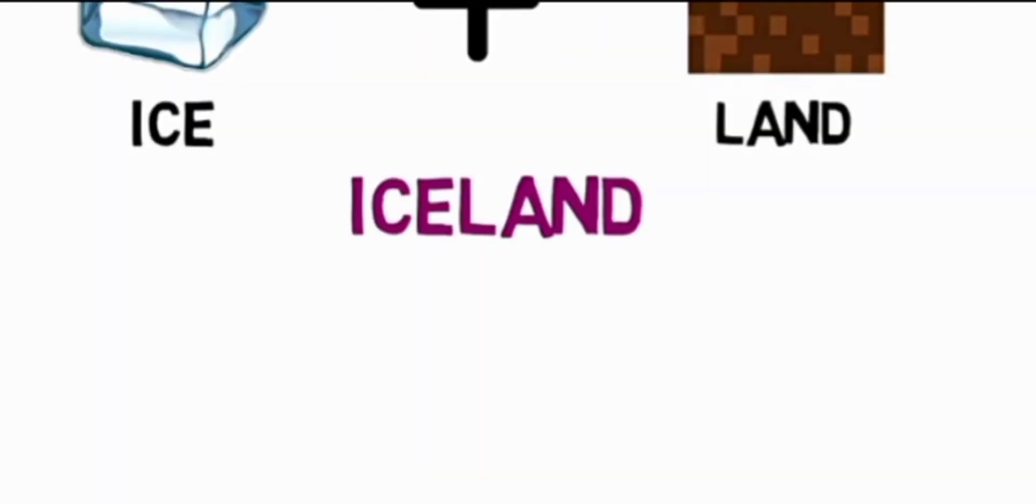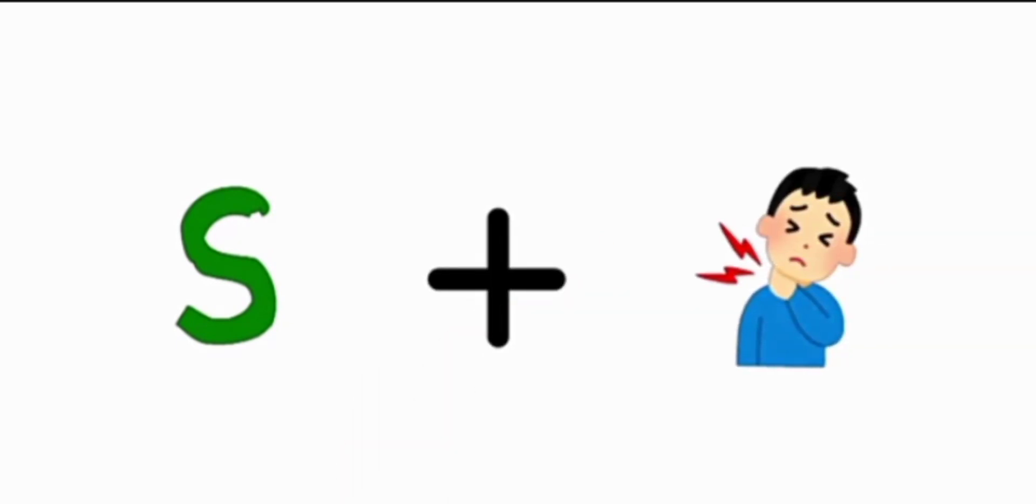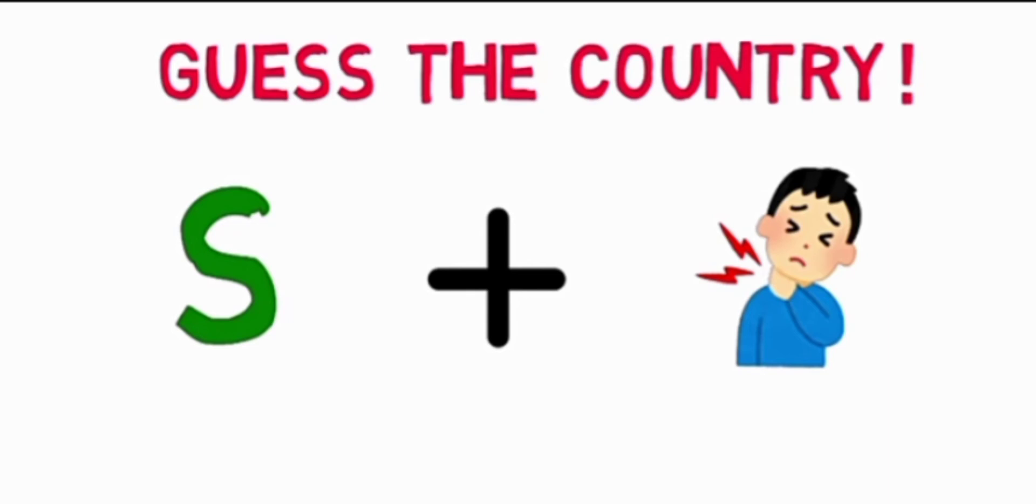You have social studies and history and geography. Number five is letter S and you have a kid. This kid's expression shows he is in pain, so you have to guess the country. This is letter S and this is the emotion of pain, so this country is Spain.